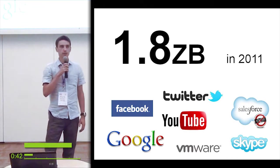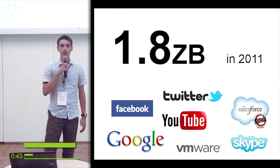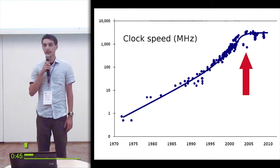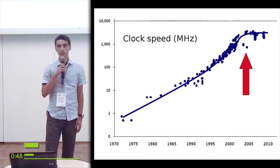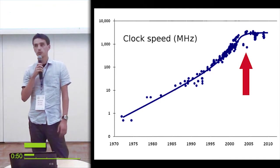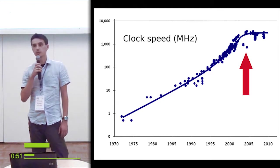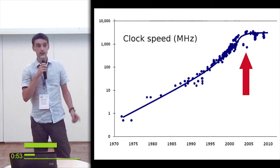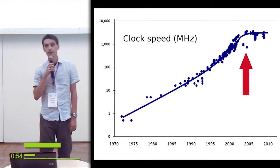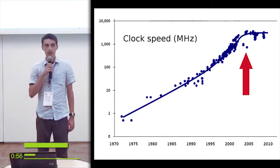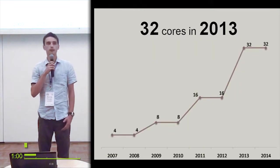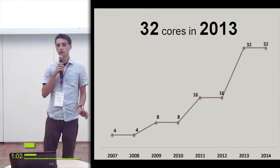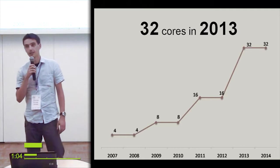Since around 2005, processors don't get any faster. You can see this flattened line around 2005 — computers don't speed up anymore. Instead, they get more cores. A multi-core processor is like having more processors, but all in one unit.